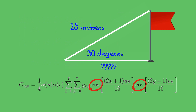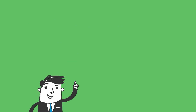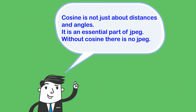Well, it turns out that it is cosine. And this leads to a very key point: cosine is not just about distances and angles — it is an essential part of JPEG. Without cosine, there is no JPEG. What this says is that the mathematics we learn in high school has a use way beyond the sort of problems we go through at school.